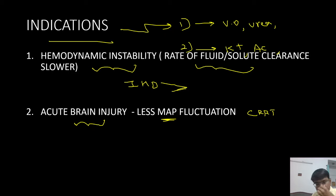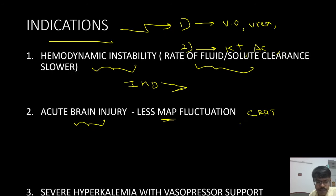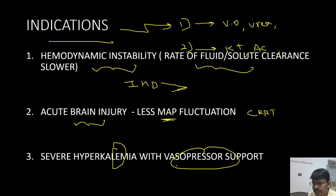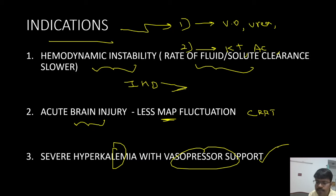Studies have shown that the benefit is greater with CRRT than with intermittent hemodialysis in hemodynamically unstable patients, including those on vasopressor support. CRRT is also preferred in acute brain injury, where you do not want significant fluctuation in mean arterial pressure. There is no absolute rule that CRRT must be selected — it is preferred based on clinical evidence. Other than these specific situations, all indications of dialysis remain the same for all forms of acute renal replacement therapy.